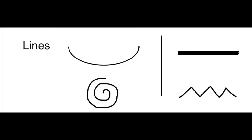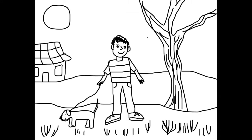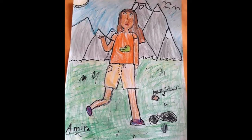We also will be using lines. Lines and shapes are two of the elements of art. Lines have special names like curved, spiral, straight, and zigzag. In just a moment, I'm going to guide you step-by-step on drawing a picture of yourself and will put you in a simple outdoor scene.